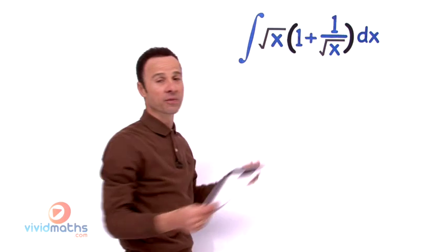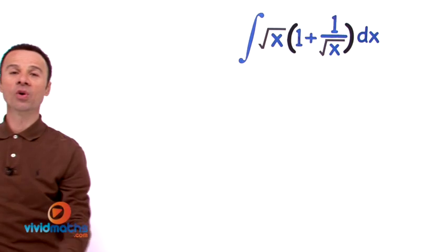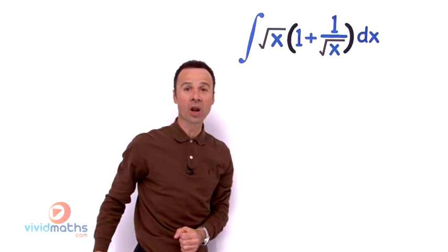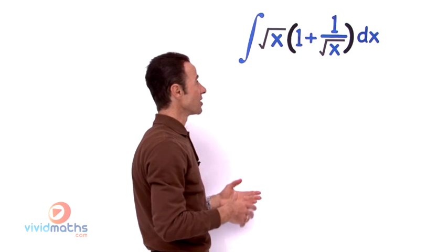So here is our first example as I unveil it for you. It is the square root of x multiplied by in brackets 1 plus 1 over the square root of x dx.